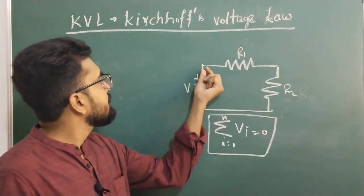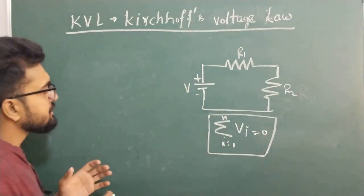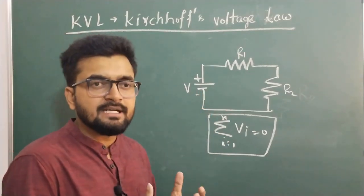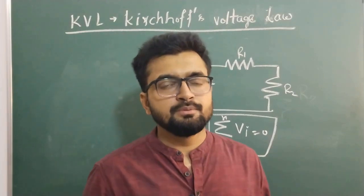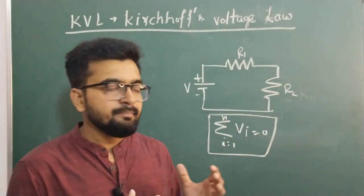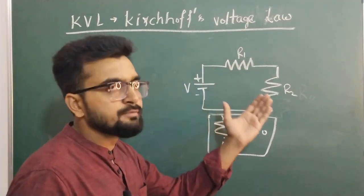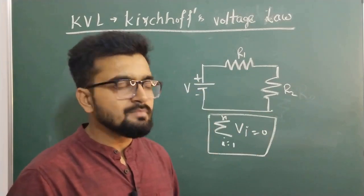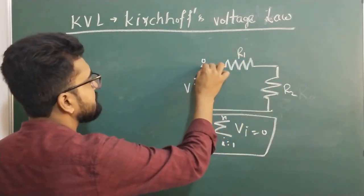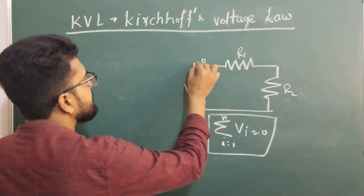Why is the sum of voltages around a closed loop zero? To understand the underlying concept, let's first understand the flow of current in the circuit. When current flows in the circuit it is basically the flow of charge. When charge flows from one point to another there must be some work done. The work is done by the battery, which produces the electric field that accelerates electrons from the negative terminal towards the positive terminal, so conventional current flows from positive to negative terminal.